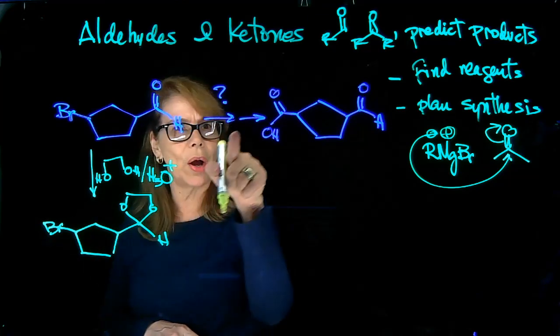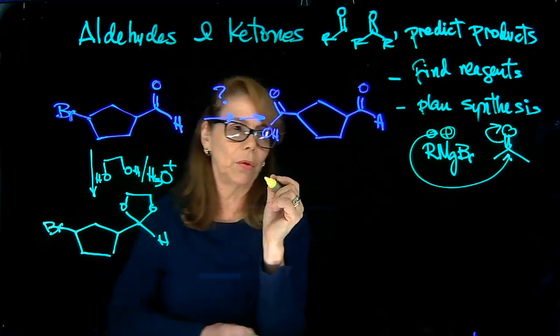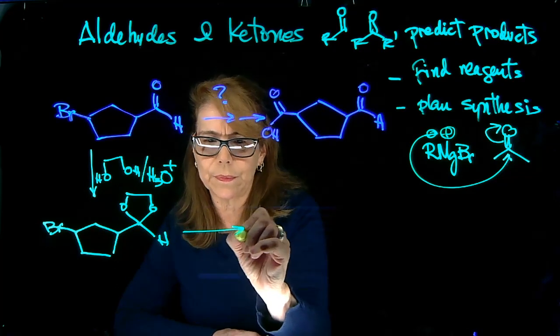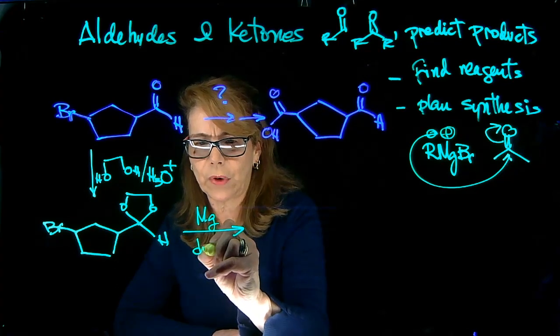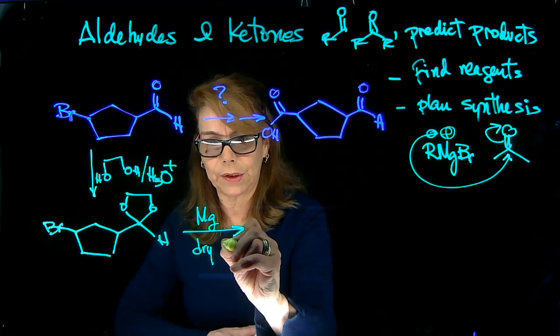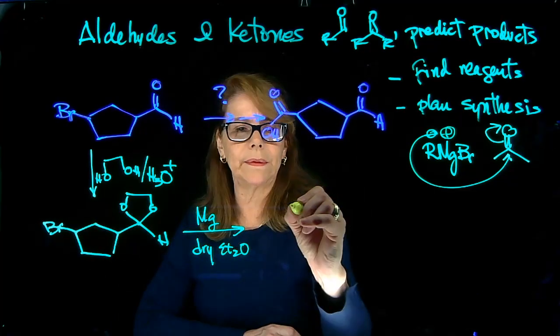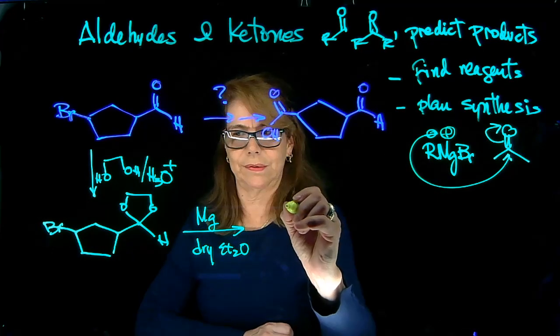So now that I have protected that, I see I need to add one more carbon. So I can add magnesium here and use dry diethyl ether, for example, and make the Grignard reagent this.